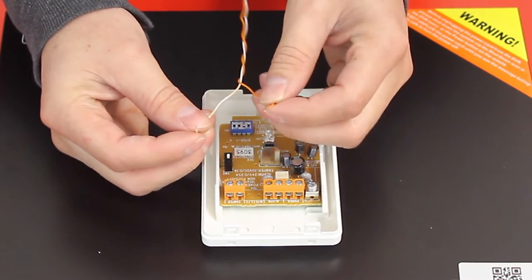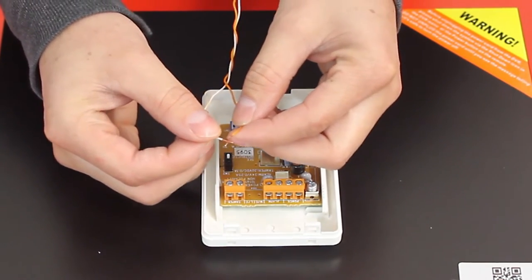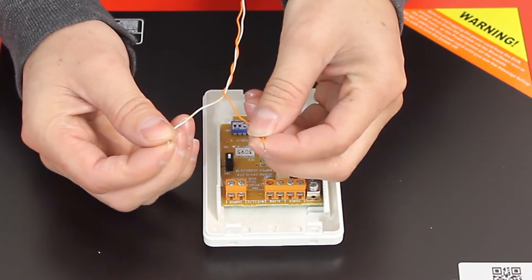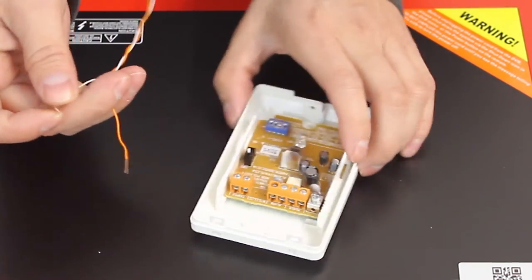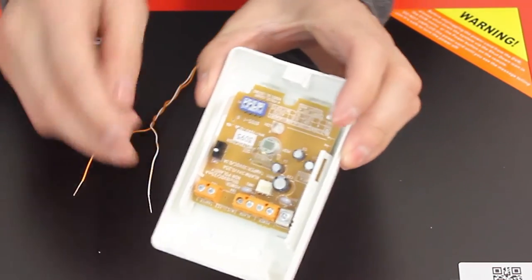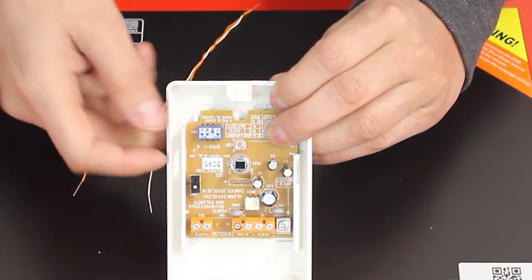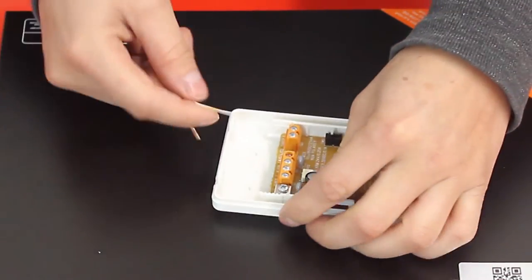Now normally closed means that the cables are always touching and when the motion sensor is triggered it opens up the connection. So those settings you can find it under your motion sensor under the dip switches. So now let's connect the cables.